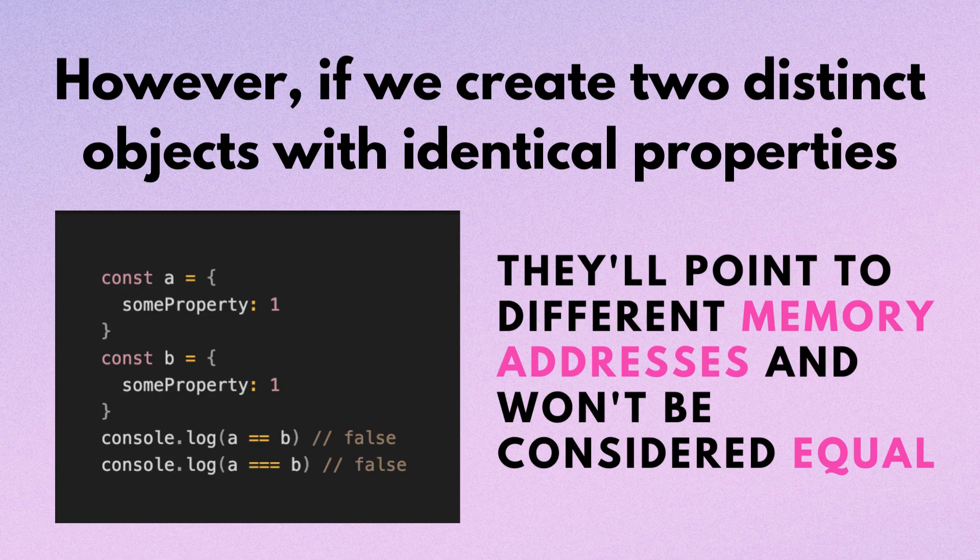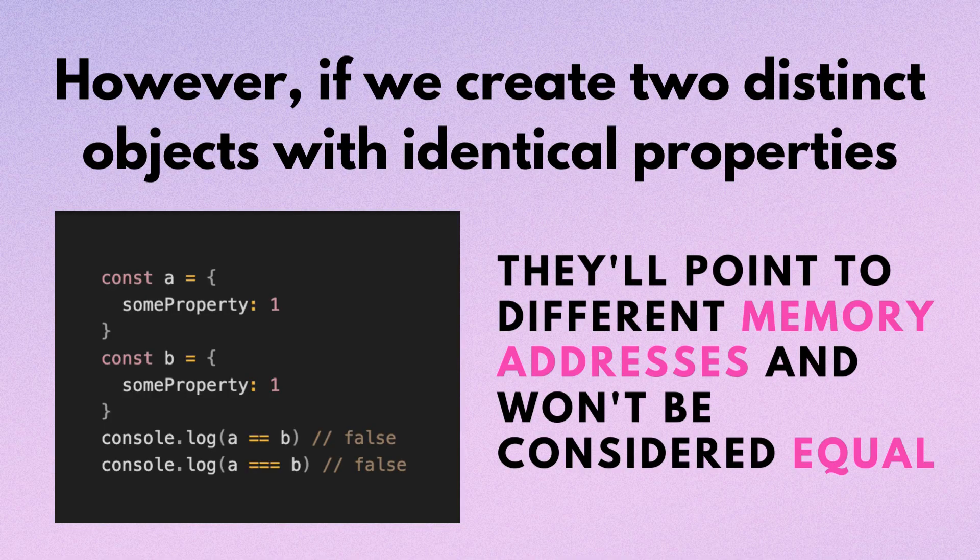However, if we create two distinct objects with identical properties, they'll point to different memory addresses and won't be considered equal.